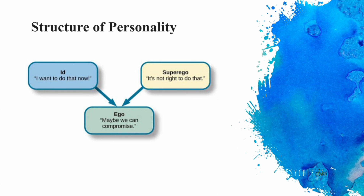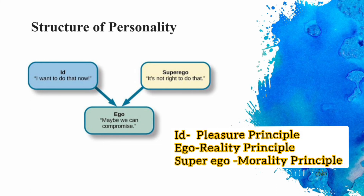The unconscious may contain experiences that are socially unacceptable. According to Freud, our personality is structured into three parts: Id, Ego, and Superego — three fundamental structures that interact in our personality development. The Id represents basic needs, urges, and desires, operating with unconscious psychic energy and driven purely by the pleasure principle.